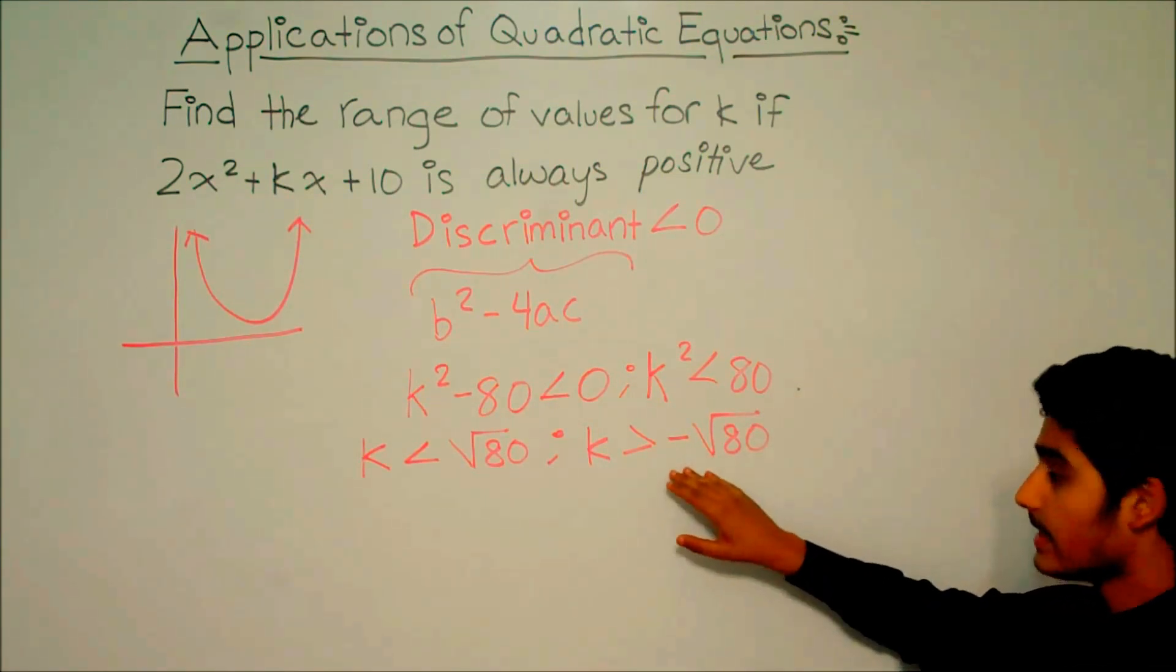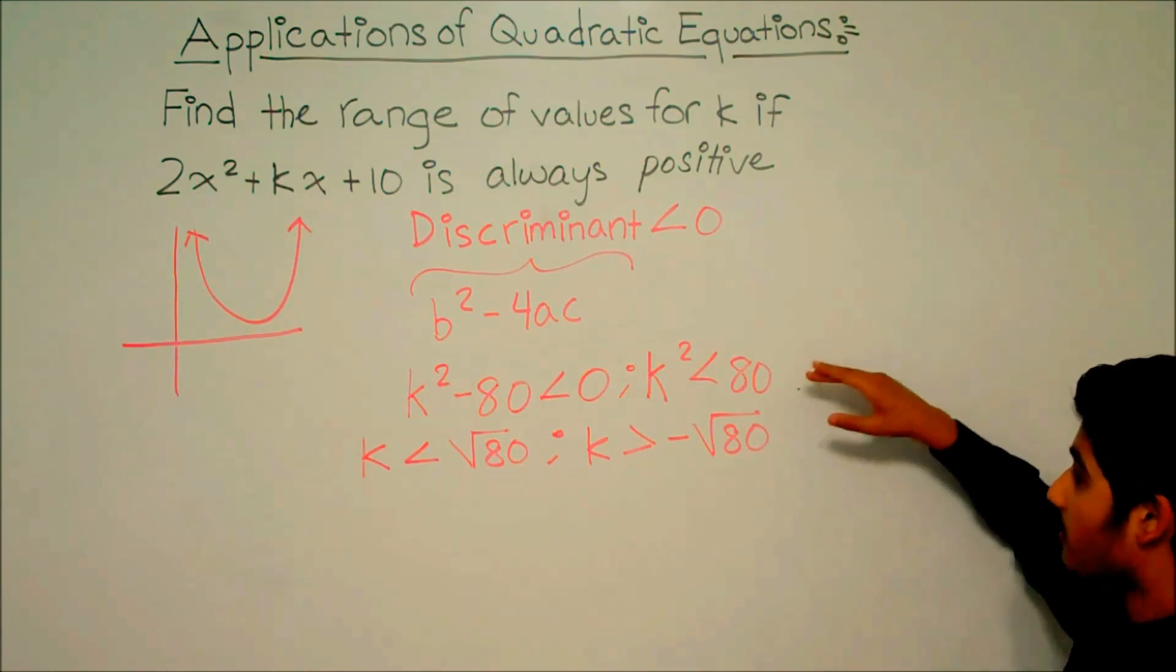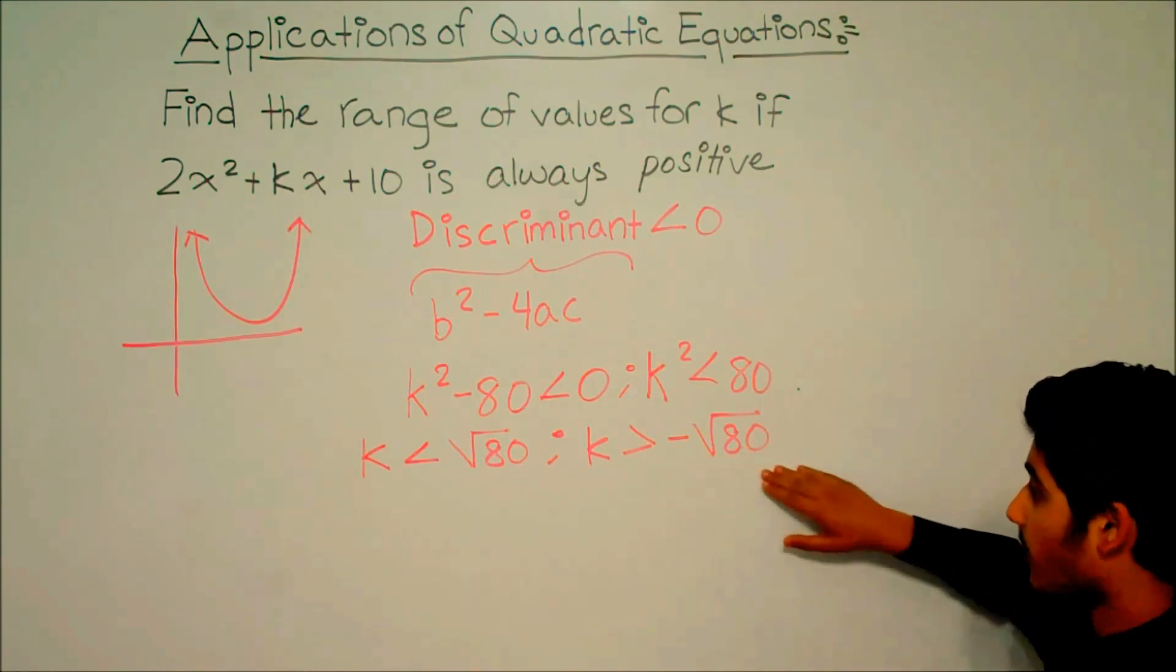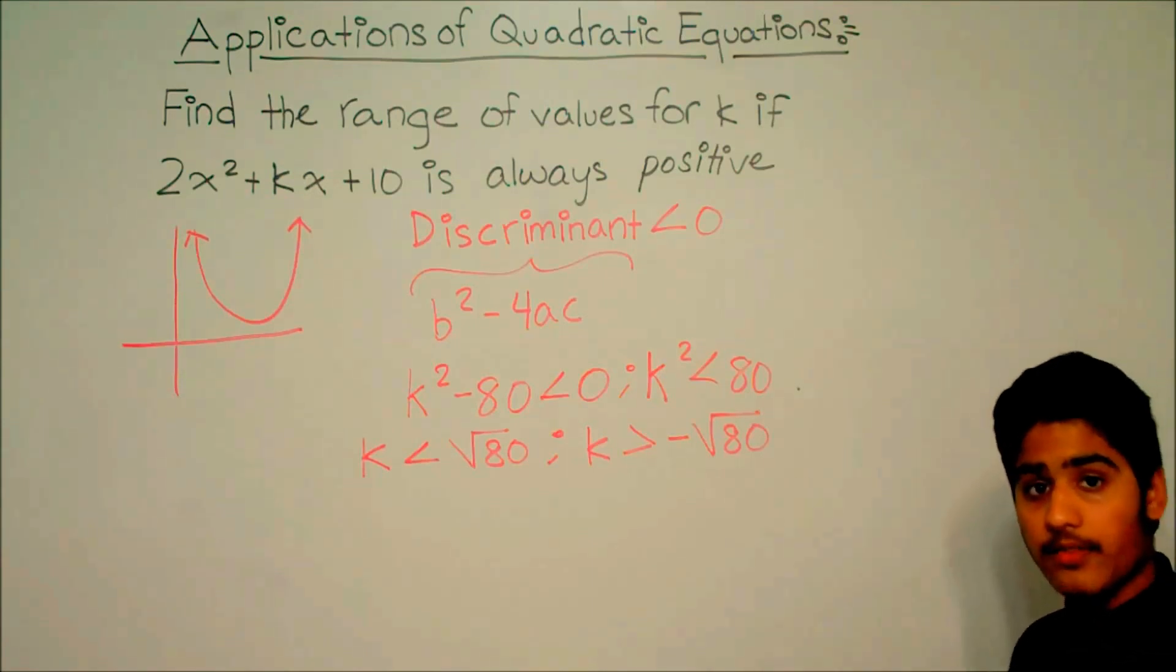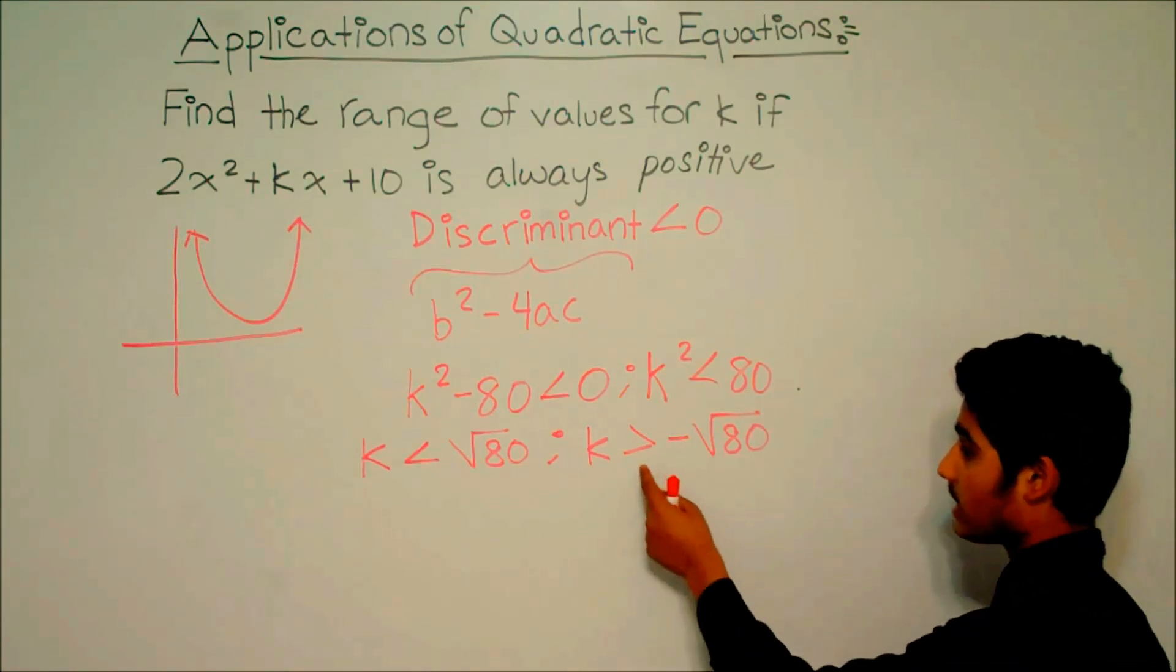That means to get negative square root of 80, we have to divide 80 by negative square root of 80. And we know that when dividing by a negative number, the sign gets flipped.